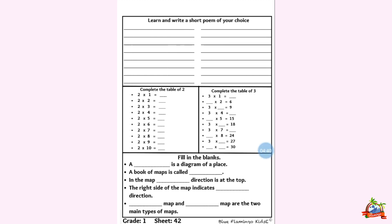Five ones are five. Five twos are ten. Five threes are fifteen. Five fours are twenty. Five fives are twenty-five. Five sixes are thirty. Five sevens are thirty-five. Five eights are forty. Five nines are forty-five. Five tens are fifty.